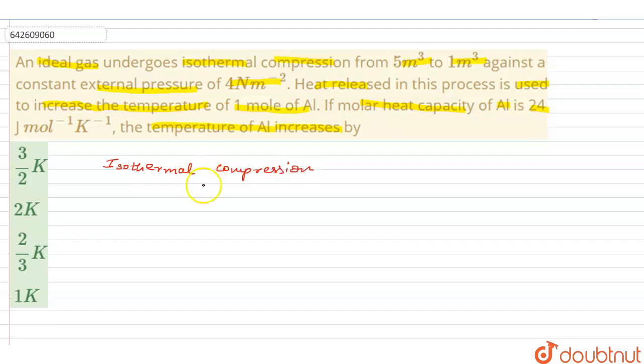So if it's an isothermal compression, we use the expression W equals minus P external delta V. In this case, P external is 4 newton per meter square, so that's minus 4 into (1 minus 5). Because the compression is from 5 to 1, so 1 minus 5, and that gives...